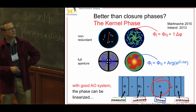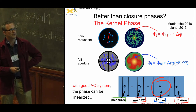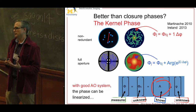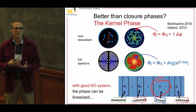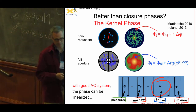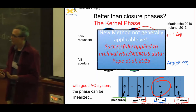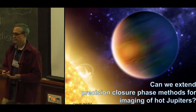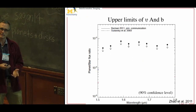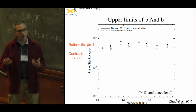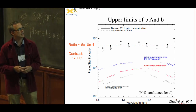There's an advance called kernel phase that you should really read about — one of the biggest advances in the field. Kernel phase is a way that, if you have a very good AO system, you can linearize the phase errors and use linear algebra tricks of singular value decomposition to extract quantities as good as closure phase but with higher signal-to-noise for faint sources. We can apply these same methods to long baseline interferometry to look for hot Jupiters, setting limits of around 2,000-to-1 on hot Jupiters using closure phases on long baseline interferometers where separation is only one or two milli-arcseconds.